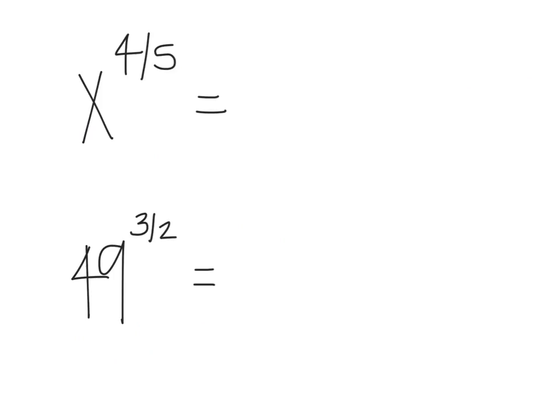So the biggest thing is just going back and forth between forms. So if I have x to the 4 fifths, that is the same thing as saying the fifth root of x to the fourth power. So these two forms, they mean the exact same thing. It's just interchangeable. And sometimes it's easier to see it written as a radical. Sometimes it's easier to see it written as an exponent. It just depends on the problem.